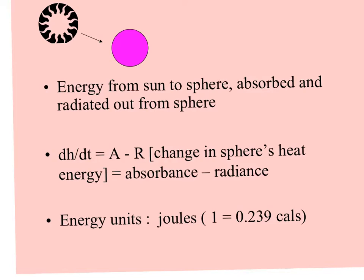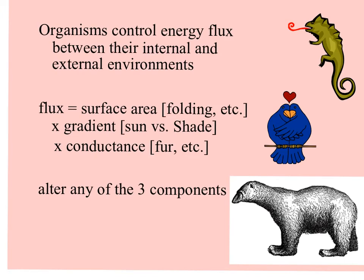The units of energy we use when talking about heat are joules, and one joule is equal to 0.239 calories. And like a sphere, organisms can control energy flux between their insides and outsides by altering their surface area in some way.